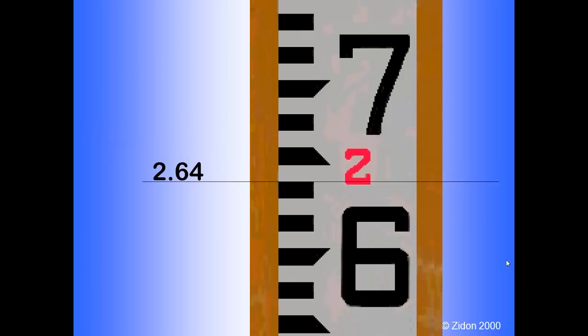Moving further downward, we have two point six four, two point six three, two point six two, two point six one, and two point six zero. At two point six zero, we again find an upward point indicating tenths of a foot.